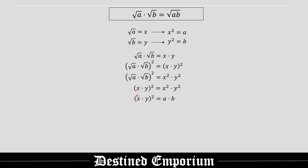The next step is to take a square root on both sides of the equation. The square will cancel with the square root, ultimately leaving you with x times y is equal to square root of a times b. Now, x times y from our preliminary equation equals square root of a times square root of b — and therefore square root of a times square root of b is equal to square root of a times b.